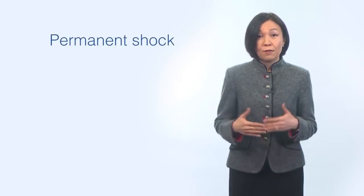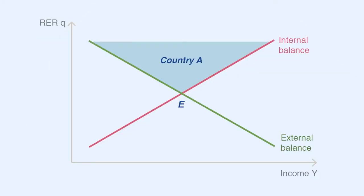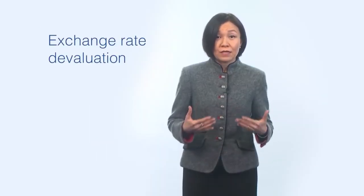If the shock is expected to be persistent or permanent, there can be two options for policy response. Option 1 would be to help the economy adjust through the exchange rate. If the exchange rate is overvalued, devaluation will help bring the real exchange rate closer to equilibrium and help the current account balance. To help support aggregate demand, country A can use accommodative fiscal policy or keep it neutral. Adjusting through the exchange rate would be used in the case of low reserves, when keeping the peg through continuous interventions might become too expensive and undermine external buffers.